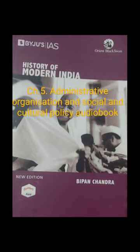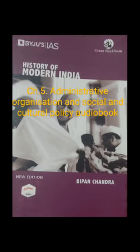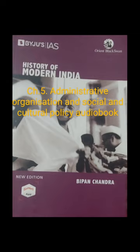Why did the British follow such a policy? Many factors combined to produce it. For one, they were convinced that an administration based on British ideas, institutions, and practices could be firmly established only by English personnel. There was also no trust in the ability and integrity of Indians. For example, Charles Grant, chairman of the Court of Directors, condemned the people of India as 'a race of men lively degenerate and base, retaining but a feeble sense of moral obligation and sunk in misery by their vices.' Similarly, Cornwallis believed that every native of Hindustan was corrupt. It may be noted that this criticism did apply to some extent to a small class of Indian officials and zamindars of the time.